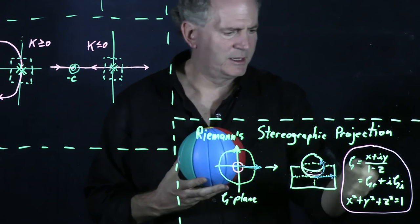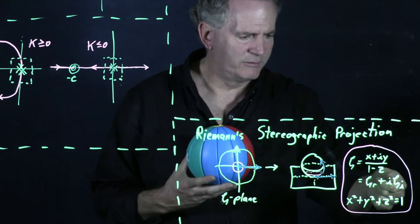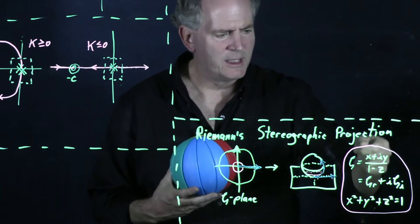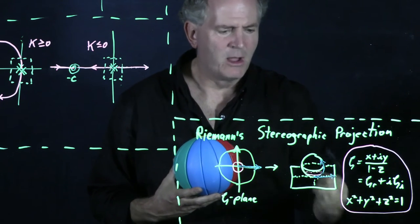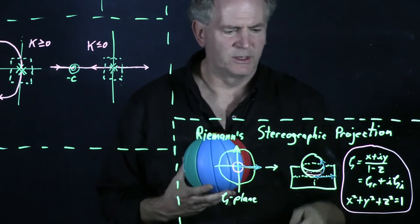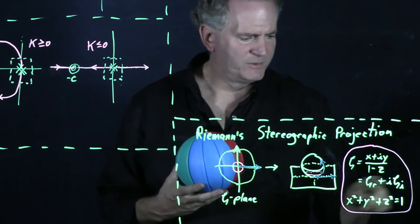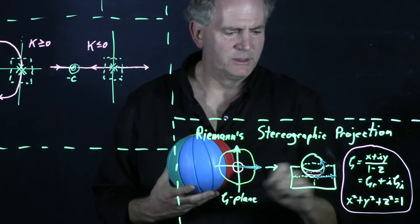So again, these equations take real and imaginary parts of zeta and correspond to corresponding points x, y, and z on the unit sphere. So the sum of their squares is equal to one mapping the origin of the zeta plane to the south pole.